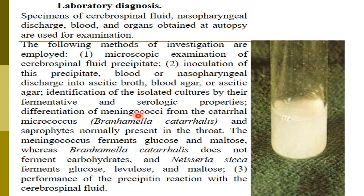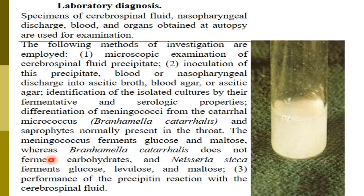The third step is culturing on appropriate media. Differentiation of meningococci from Branhamella catarrhalis (formerly called Neisseria catarrhalis and Moraxella catarrhalis) is important, as catarrhalis is a saprophyte normally present in the throat. The meningococcus ferments glucose and maltose, while Branhamella catarrhalis does not ferment carbohydrates. Neisseria sicca ferments glucose, fructose, and maltose.